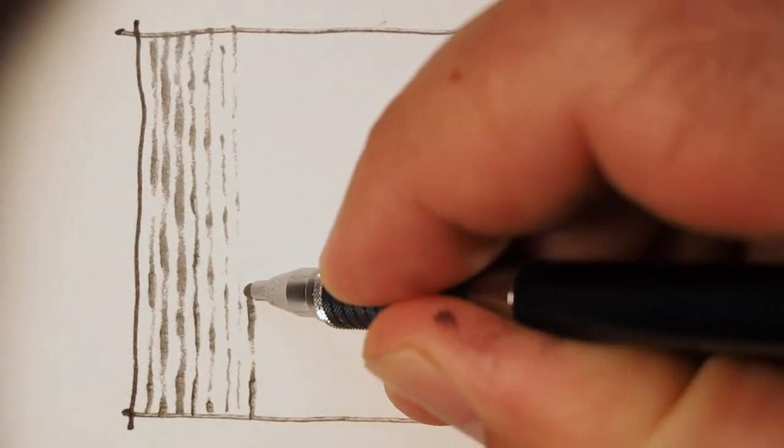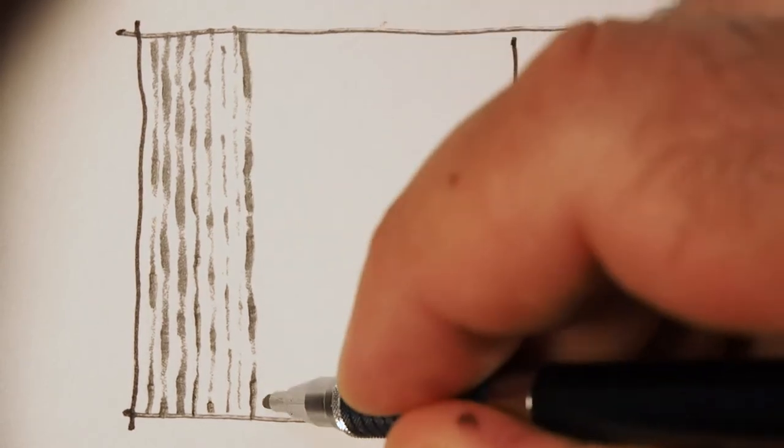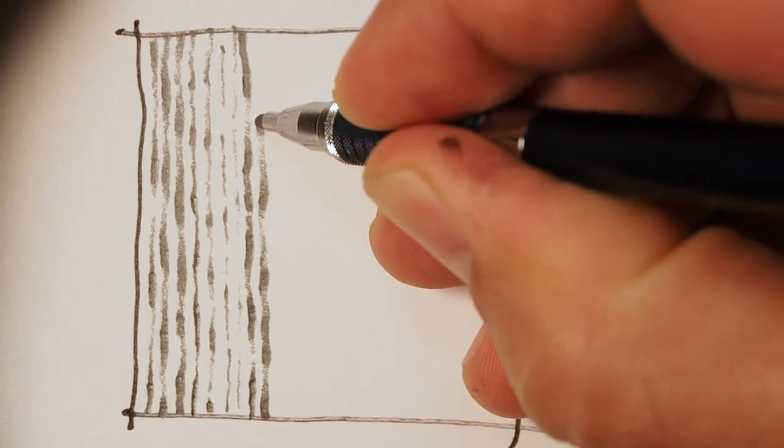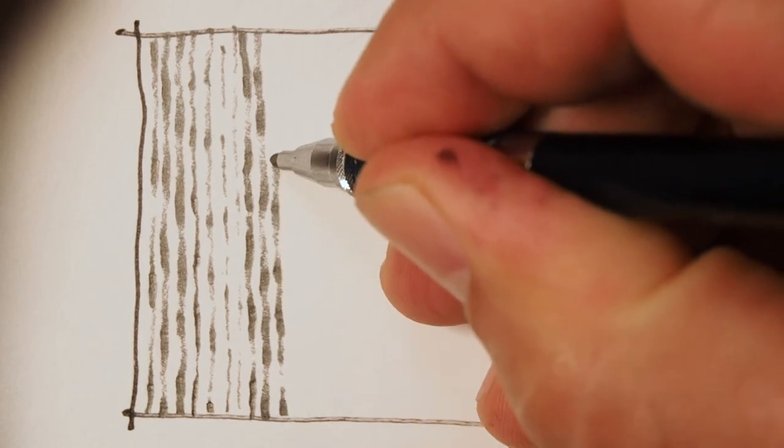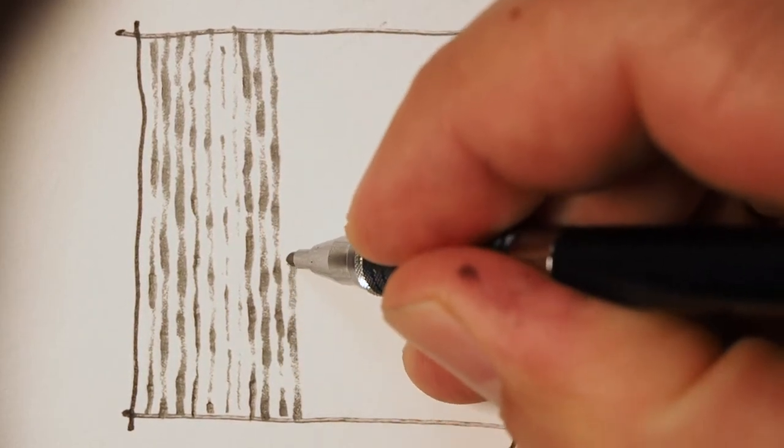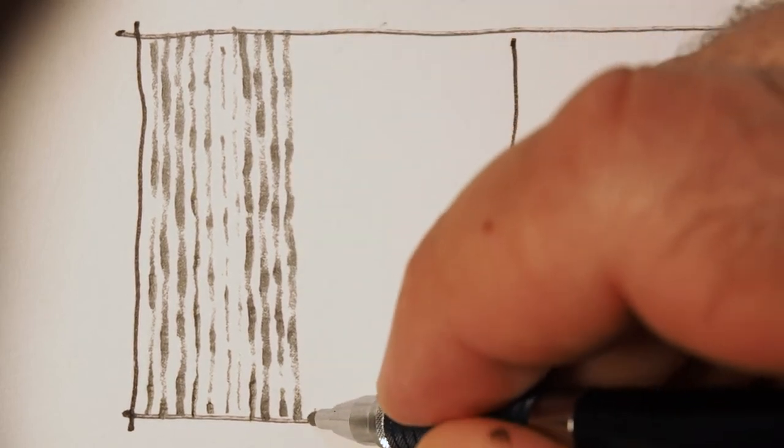It's very important that you learn how to use line weight in your drawings. And this is just basically how hard you're pressing down. So the next few squares are going to be all about varying how hard I press down on the pencil. Here I'm making a kind of texture that actually reminds me of waves on a beach.